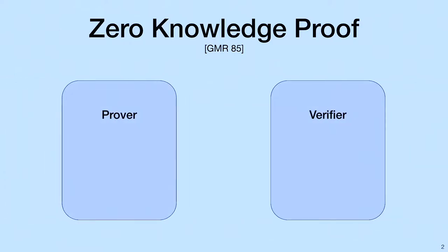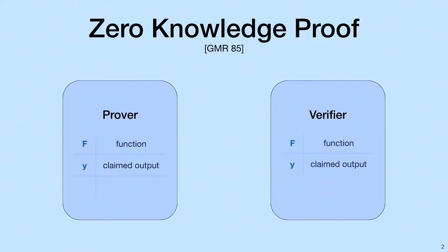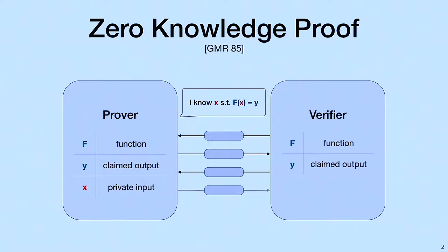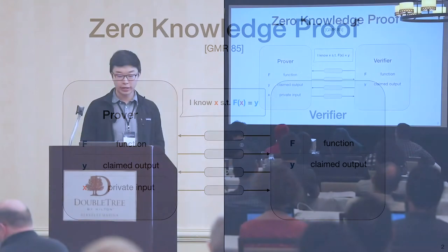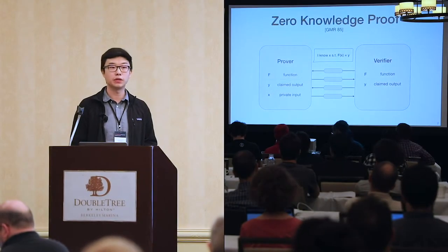To begin, let's define conventions and define a zero-knowledge proof. In a zero-knowledge proof, there are two parties, a prover and a verifier, and both know a public function f and a claimed output y. The prover says, I know x such that f of x is equal to y. The verifier then challenges the prover by playing this interactive game, after which time the prover will convince the verifier if he or she is honest.